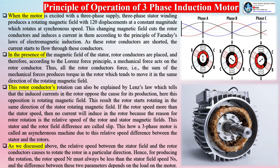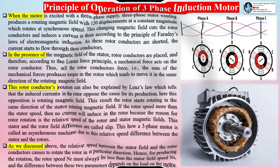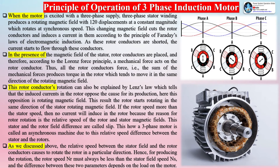When the motor is excited with a three-phase supply, the three-phase stator winding produces a rotating magnetic field with 120-degree displacements at a constant magnitude, rotating at synchronous speed. This changing magnetic field cuts the rotor conductors and induces a current in them according to Faraday's laws of electromagnetic induction. As these rotor conductors are shorted, current starts to flow through them. In the presence of the stator's magnetic field, and according to the Lorentz force principle, a mechanical force acts on the rotor conductors.